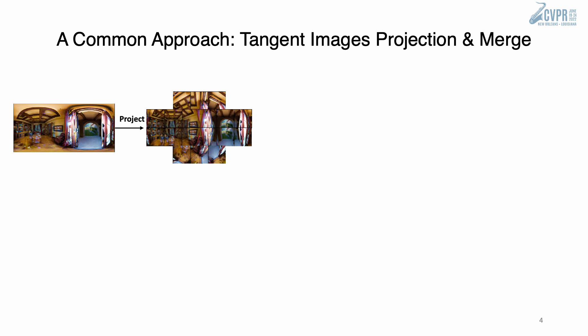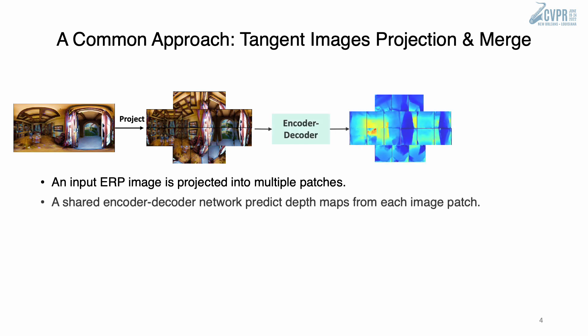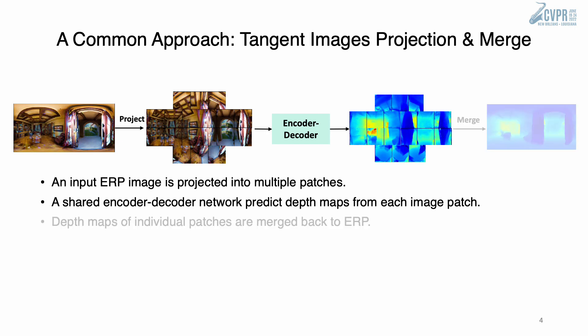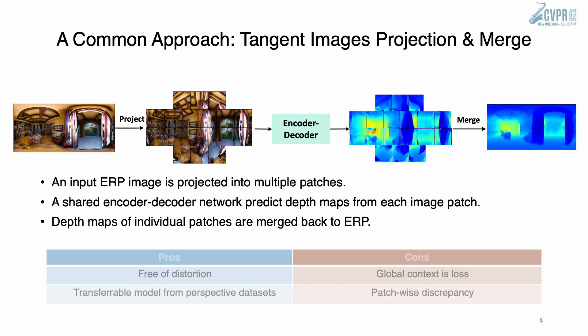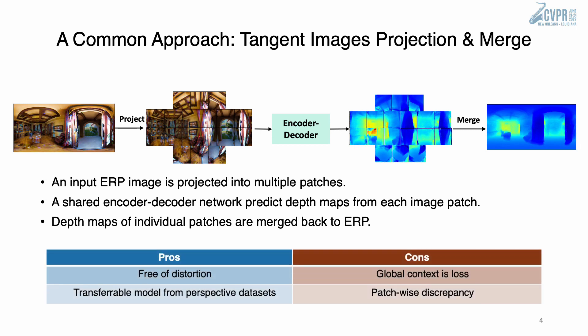To perform depth estimation on 360 images, a common approach is to use tangent image representation. First, an input rectangular image is projected onto multiple perspective patches. Next, the patches are passed through an encoder-decoder network which outputs depth maps for individual patches. Finally, the depths of all patches are projected and merged as one depth map. This divide-and-conquer approach has both pros and cons. Pros include freedom from distortion and the transferability of pre-trained models on large-scale perspective image datasets. Cons include the loss of global context and a severe discrepancy issue that negatively impacts the quality of the depth map.